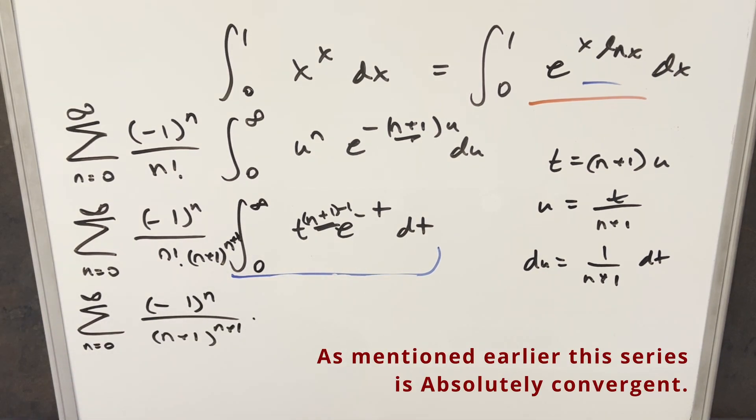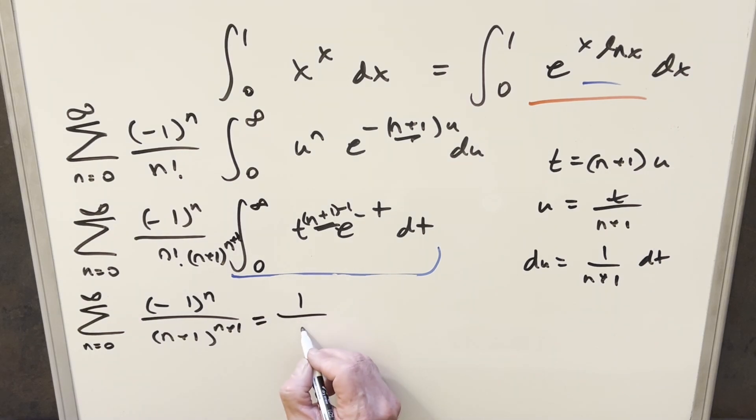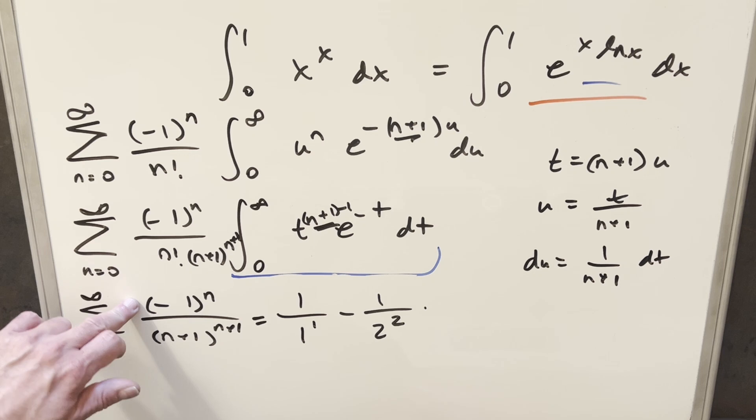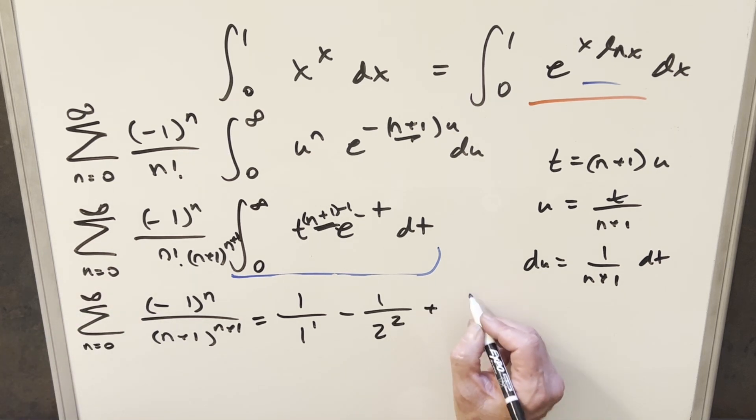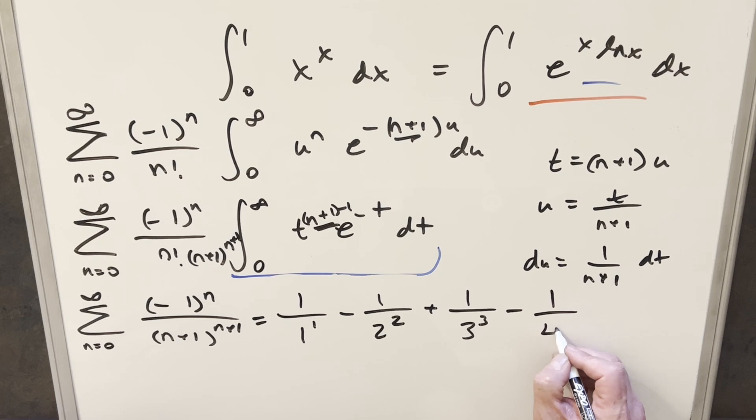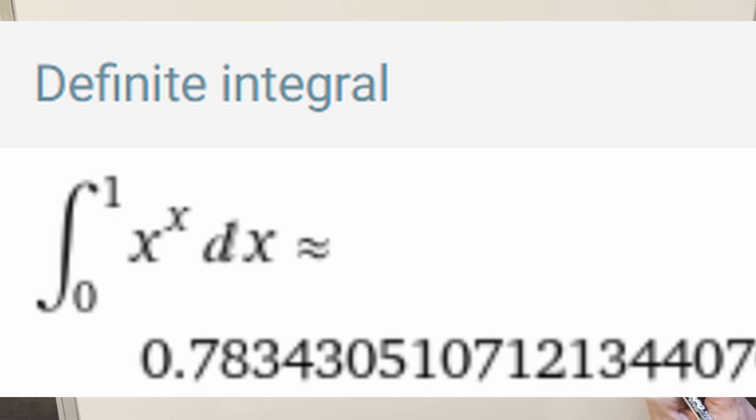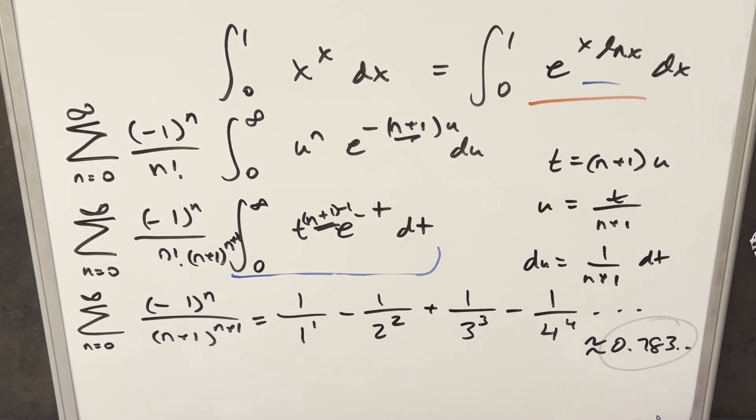And this is about as simple as I can get it. Let's just write out a few terms to see what's happening. So this is, I can write this as 1 over 1 to the 1. And the next term is going to become 1 over 2 to the 2. And because of this minus 1 to the n, we've got the alternating signs. This one's going to become plus 1 over 3 to the 3. And this is going to go on and on like this all the way to infinity. And for this thing, we can actually get a decimal approximation of this answer. It's something like 0.783.